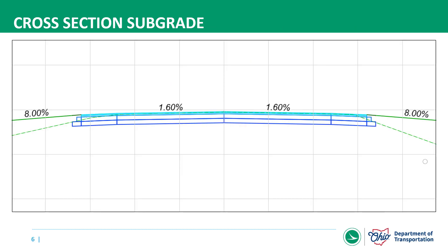In OpenRoads Designer, a typical cross-section looks like this, but it's almost always missing the subgrade components. We've debated about adding the subgrade component to the ODOT template components delivered in the workspace within the ITL, but there's almost always a step or two that requires some user interaction to make that template complete, which could cause more confusion. So for now, the expectation is that the designer is to add the subgrade component to their template.